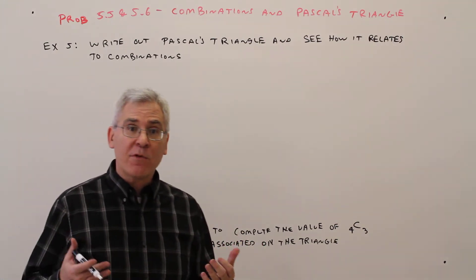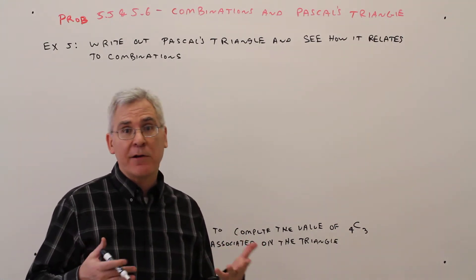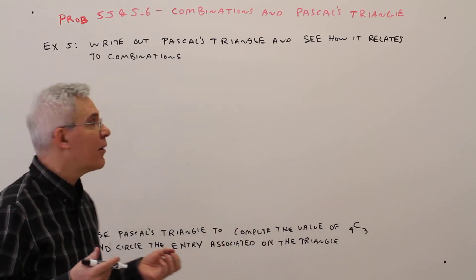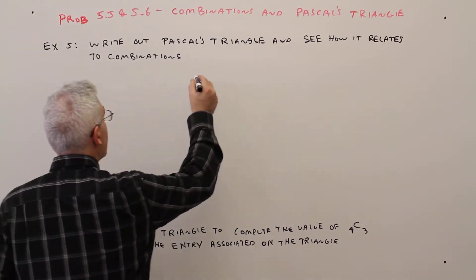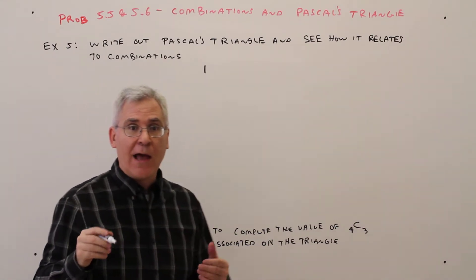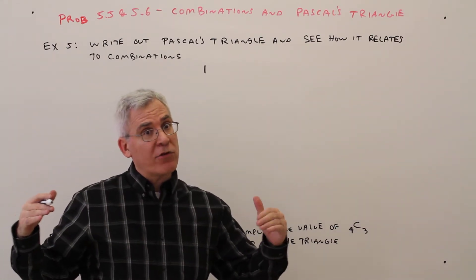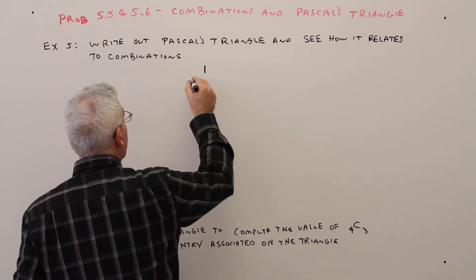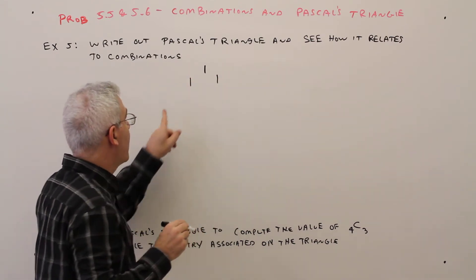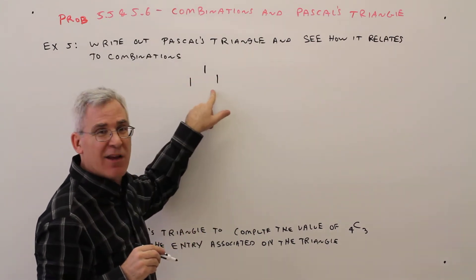Perhaps you have seen Pascal's Triangle in Algebra 2. If not, here's how it works. You always start with a 1 at the very top, and then 1s will branch out on the sides. So we'll get a 1 followed by a 1. Common mistake is made right there.